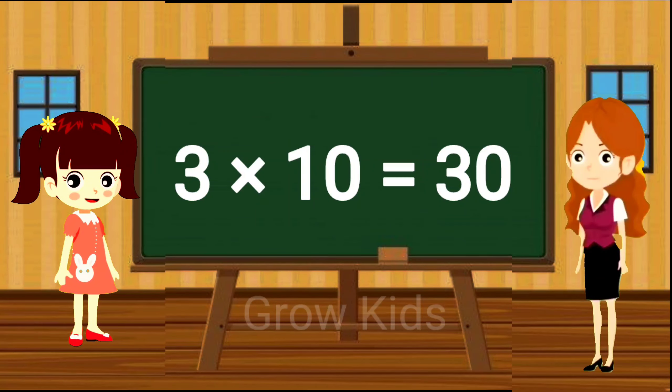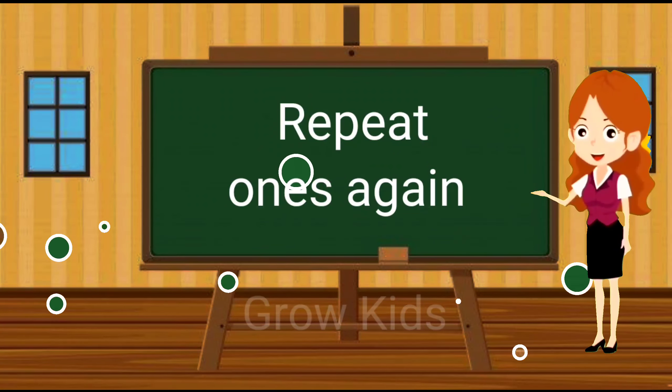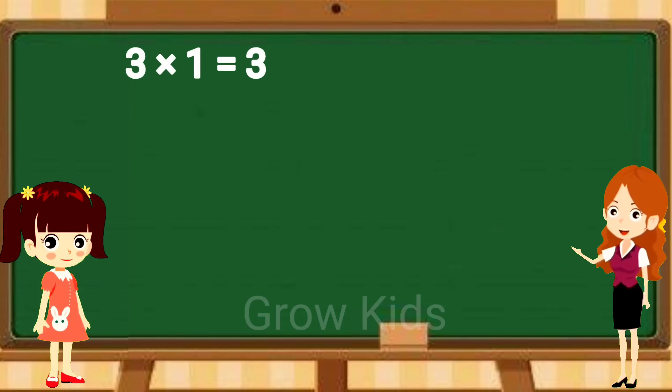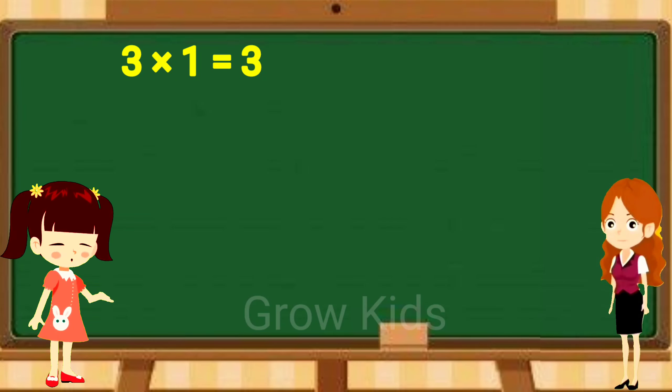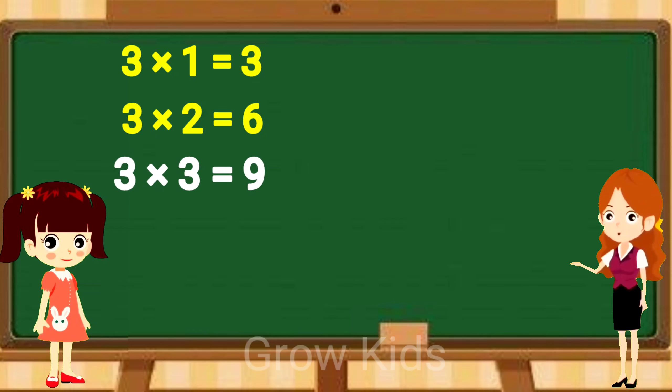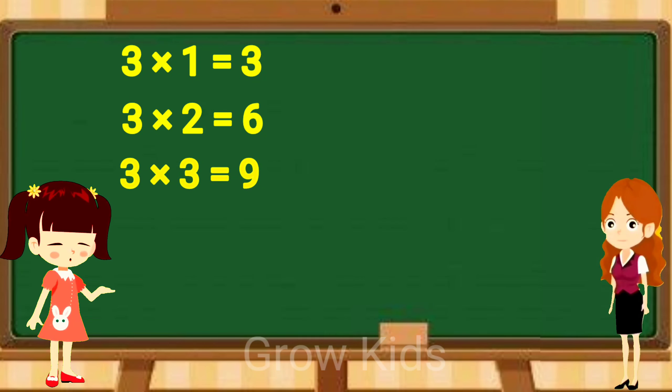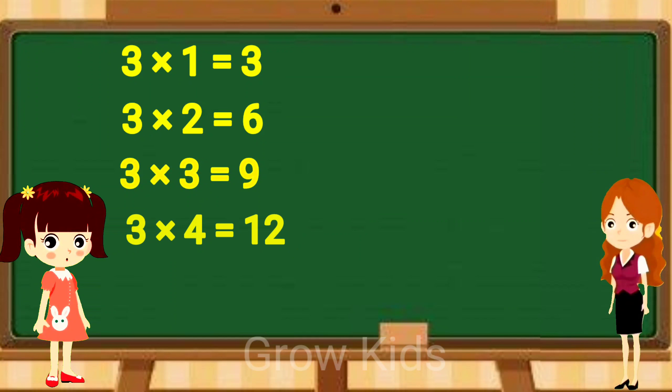Repeat once again. 3 1s are 3, 3 1s are 3. 3 2s are 6, 3 2s are 6. 3 3s are 9, 3 3s are 9. 3 4s are 12, 3 4s are 12.